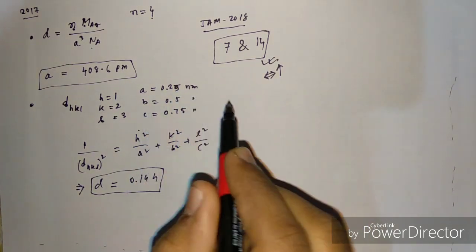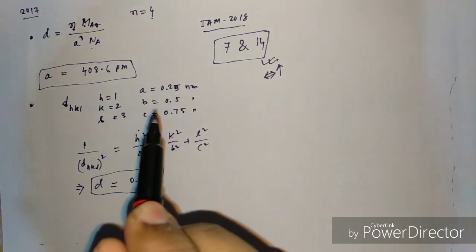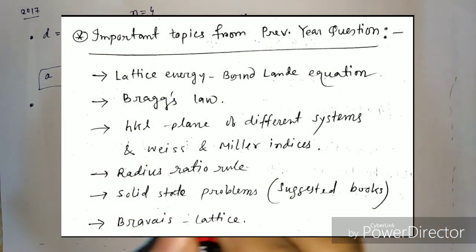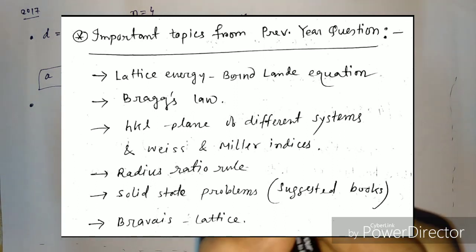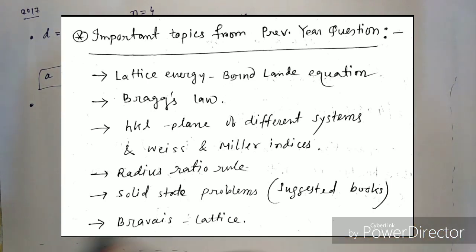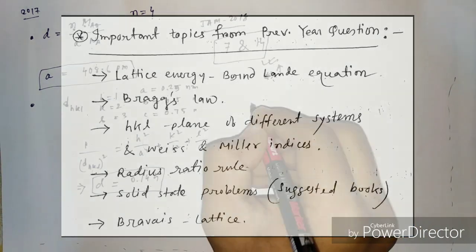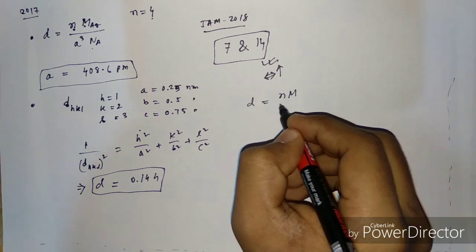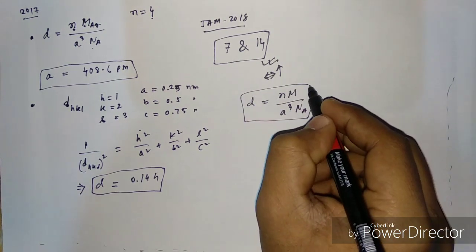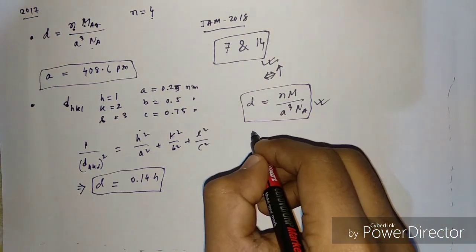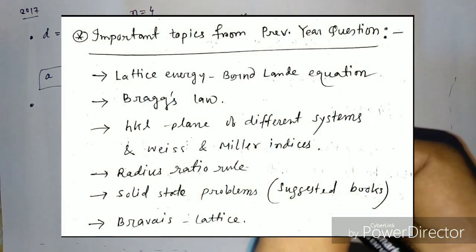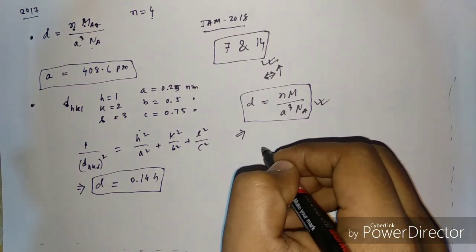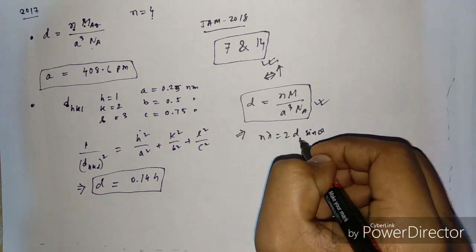Based on previous year questions, the important topics for JAM 2019 are: lattice energy and the Born-Landé equation; Bragg's law (nλ = 2d sinθ); HKL planes, Miller indices for different systems; radius ratio rule and coordination numbers; solid state parameter calculations using density = nM / (a³ × N_A); and Bravais lattices. Remember that when n is not given in Bragg's equation, always assume n = 1.